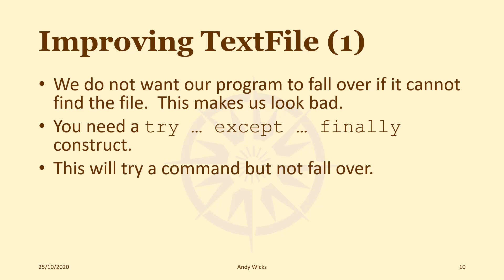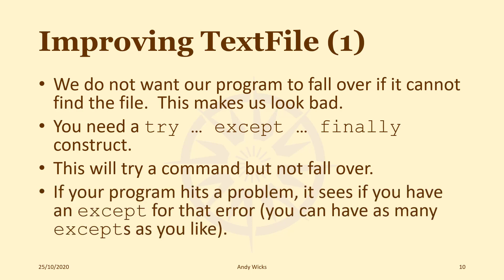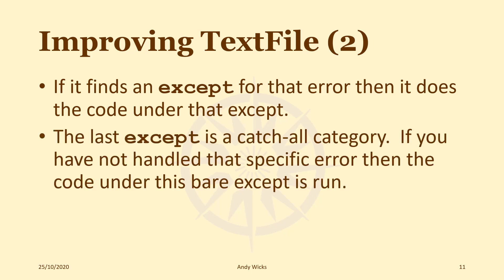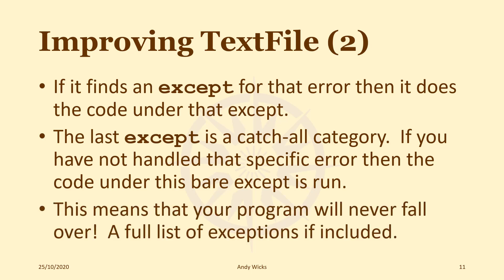We're not talking about programming bugs where you've got the code wrong — we're talking much more about what happens if the environment around that code changes. If your program hits a problem and sees you have an except for that error, you can have as many excepts as you like and it just runs whatever code you tell it under that except. The last except with nothing after it at all is just a catch-all category — if you haven't handled that specific error, the code under that bare except is run, meaning your program will never fall over.